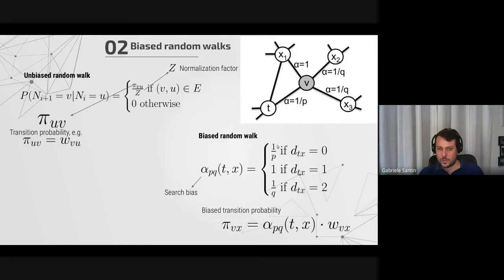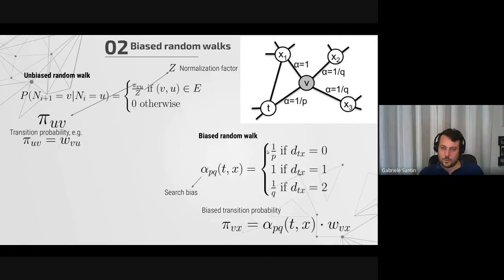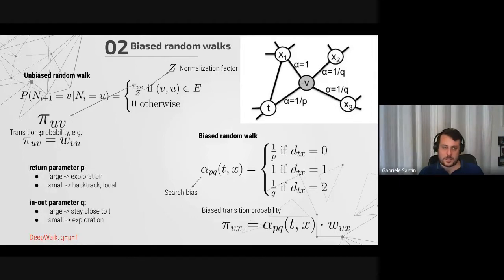Depending on the distance from t, we assign a different weight. Distance zero means going back to t after visiting v — probability 1/p. Distance one stays at the same level as t — unit probability. Distance two means moving further away — probability 1/q. By playing with these numbers, we can bias the random walk to either come back or explore. These two parameters are called the return parameter p and the in-out parameter q.